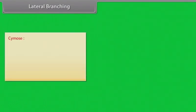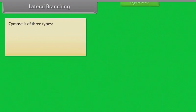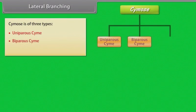In cymose branching, the growth of the main stem is definite. The main stem produces lateral branches which grow more vigorously than the main axis. As a result, the plant spreads out above and becomes more or less dome-shaped. Cymose is of three types: uniparous cyme, biparous cyme, and multiparous cyme.